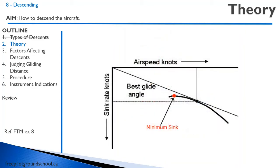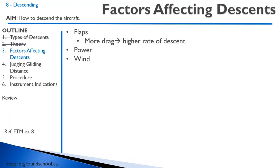If we look here, this is called a drag polar. As we increase our speed, at higher speeds we have higher sink rates. At minimum sink, that speed is somewhat similar to your best endurance speed. If we take a tangent line from the origin to the curve, that gives us the best lift-to-drag ratio, or best glide speed. Even though we're descending at a greater rate than minimum sink speed, we're also traveling much farther forward, so we get the best glide.